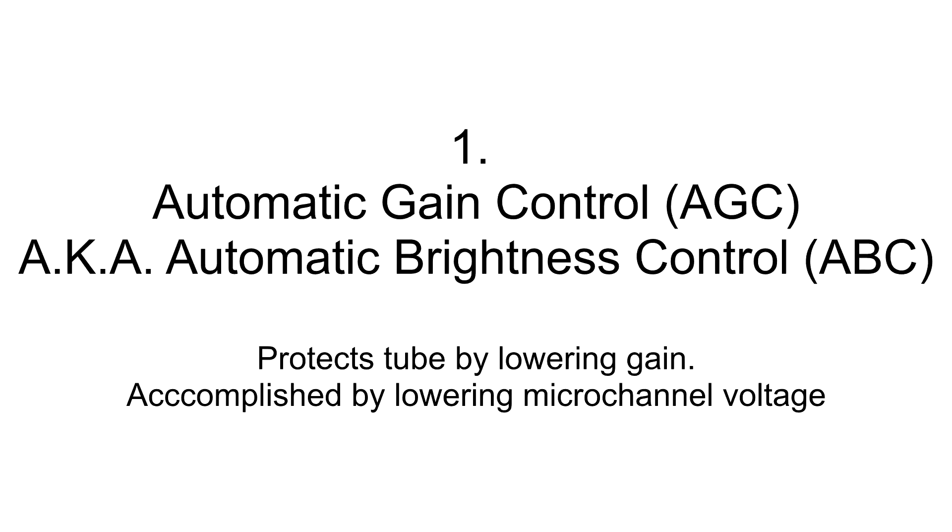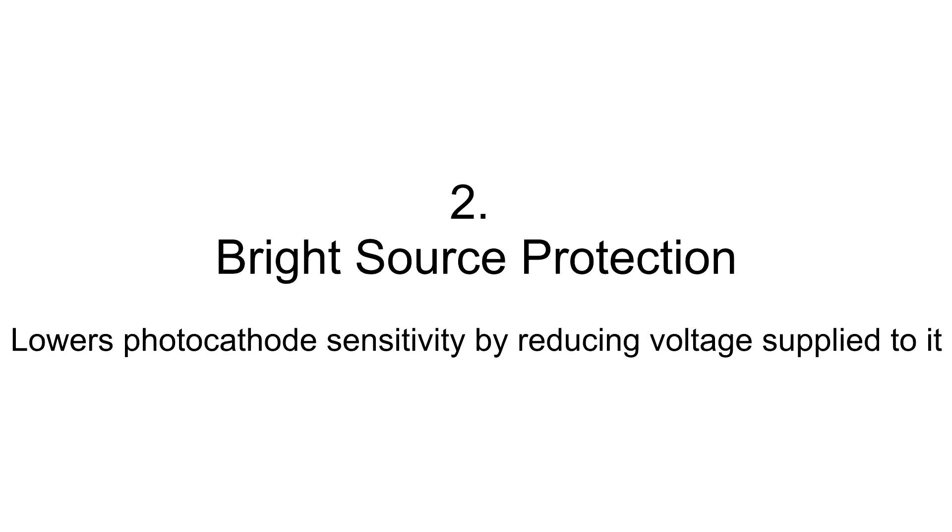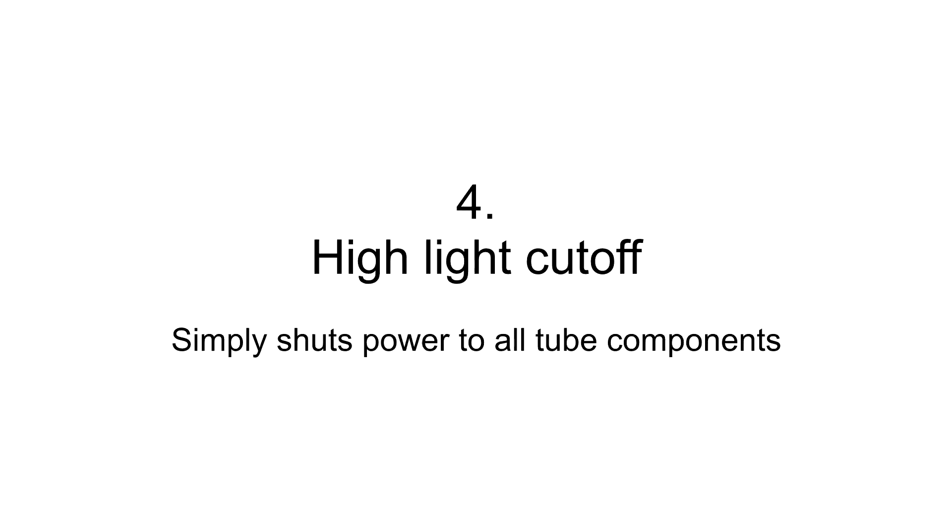These four mechanisms are the following: automatic gain control, also called automatic brightness control, bright source protection, auto gating, and highlight cutoff.